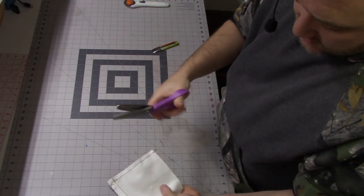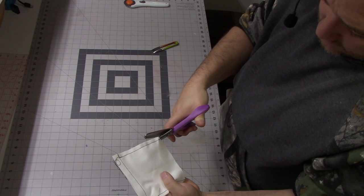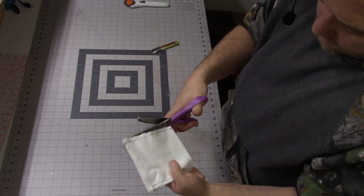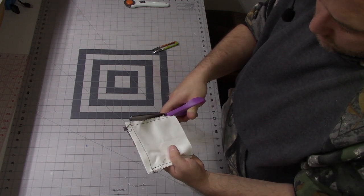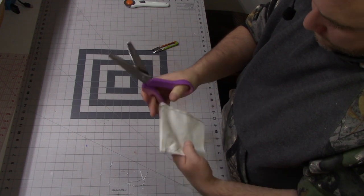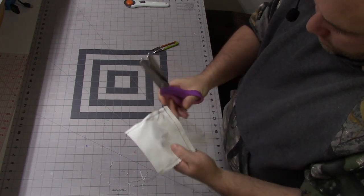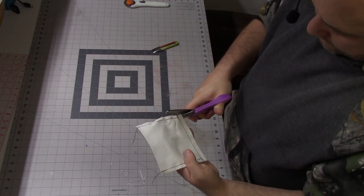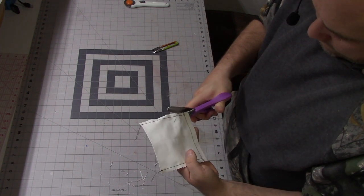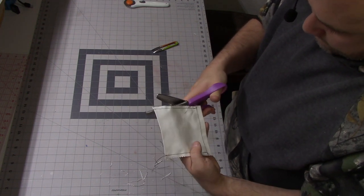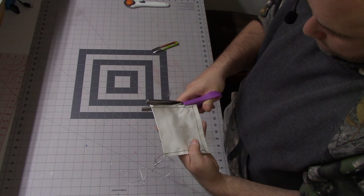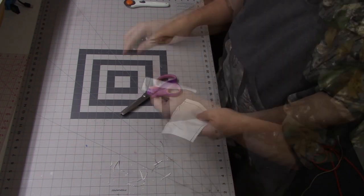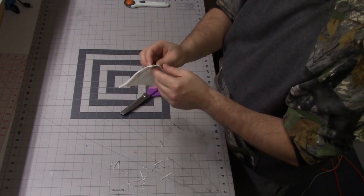I'm just going to take my pinking shears and pink the edge. And then just go back and trim any threads if needed.